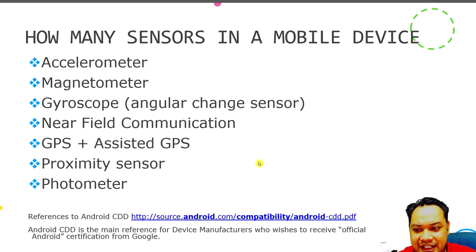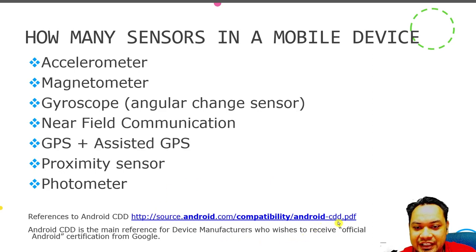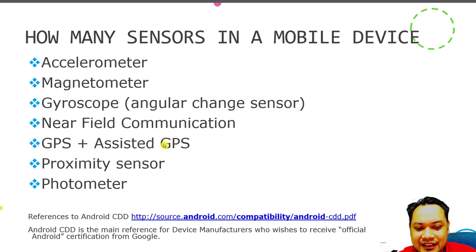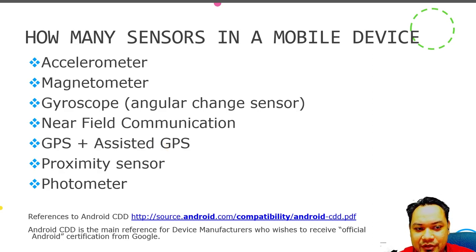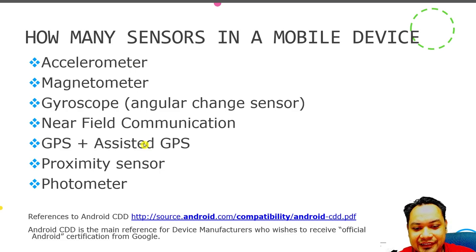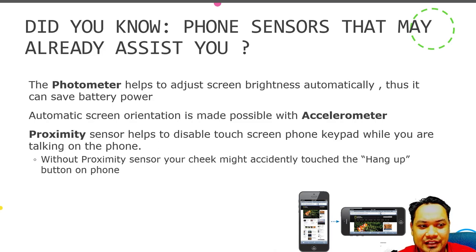For an Android device to receive Google certification — analogous to a quality certification — the manufacturer must adhere to the Android CDD documentation. Those devices must at minimum have an accelerometer, GPS, and at least a rear-facing camera. So if you are programming for Android devices, you can be assured that the device will have an accelerometer, GPS, and at least one back-facing camera.